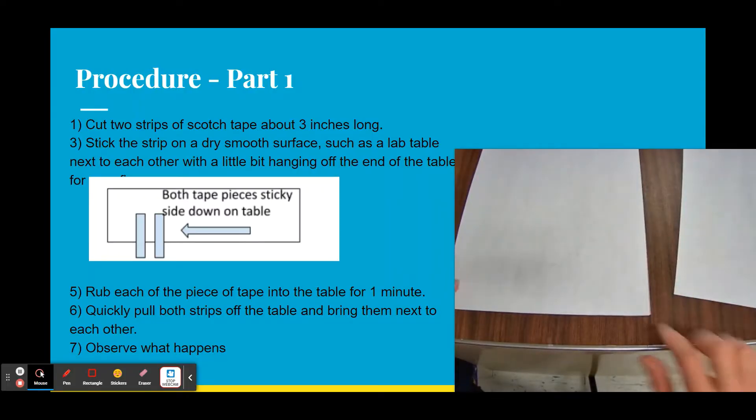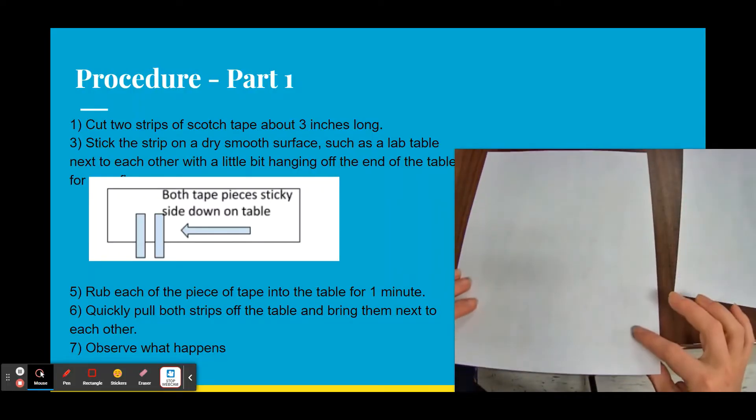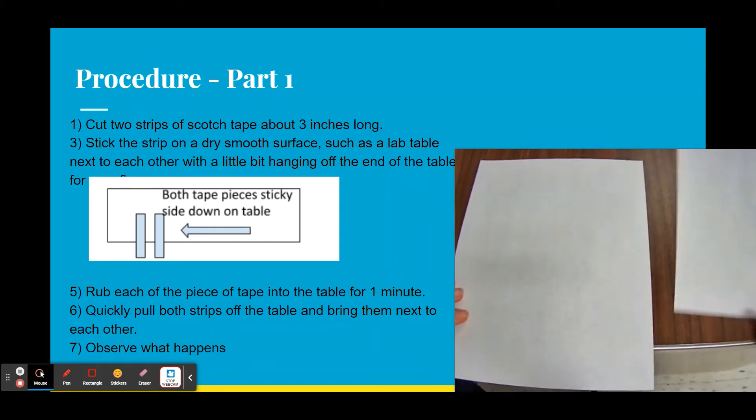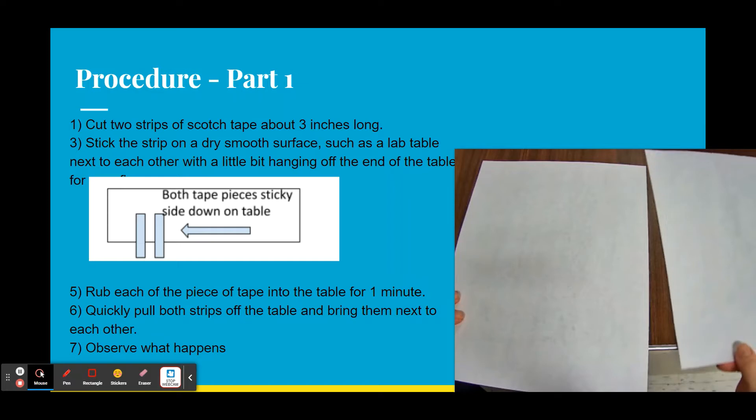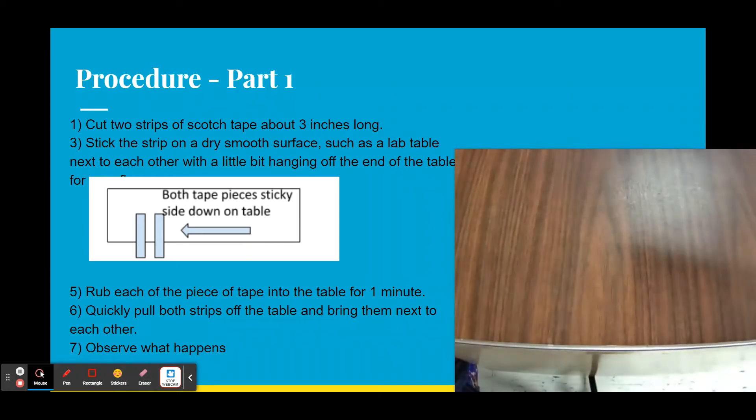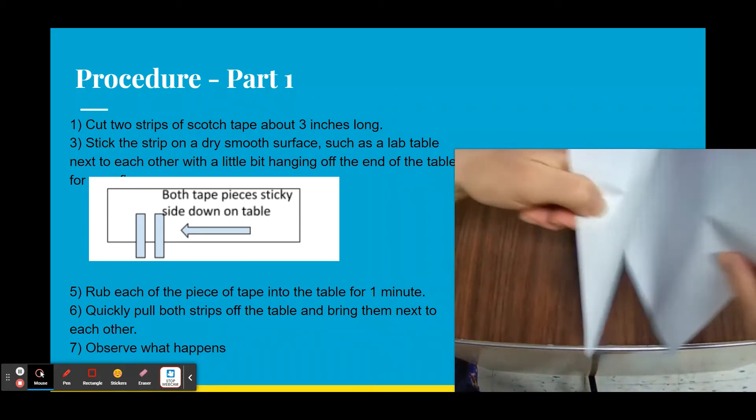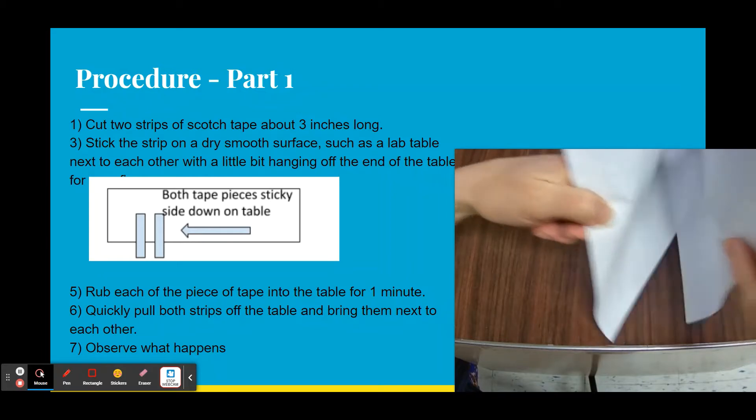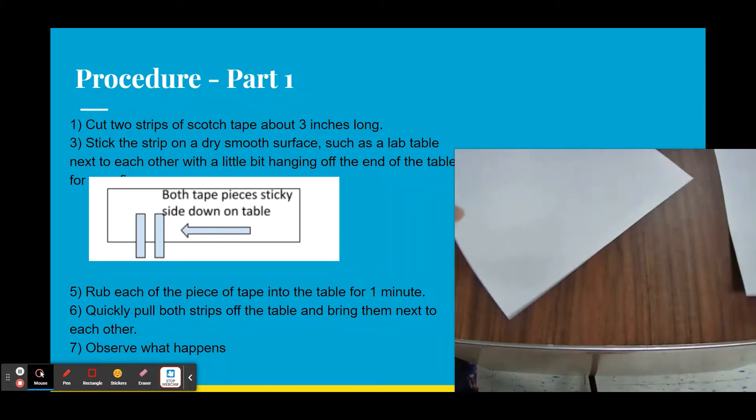To model this procedure for you, I'm going to use two pieces of paper. Here's one piece of paper hanging off a little bit so I can put my finger here, and the other piece of paper. They're going to be side by side on the table, and I'm going to rip them both up at the same time and then bring them close together. You'll see there's no interaction with the paper.